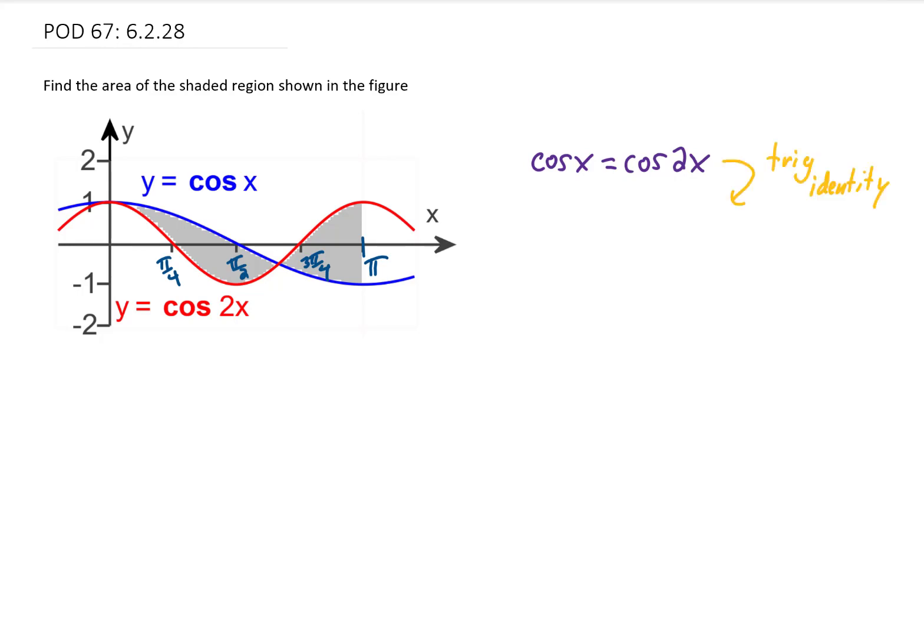First, we can use a trig identity to rewrite cosine of 2x as 2 cosine squared x minus 1. The reason we do this is so that we don't have an x and a 2x as arguments in our cosine. It's going to be much easier to solve if we have all x's as arguments in our cosines. Then we can get everything on one side of the equation,